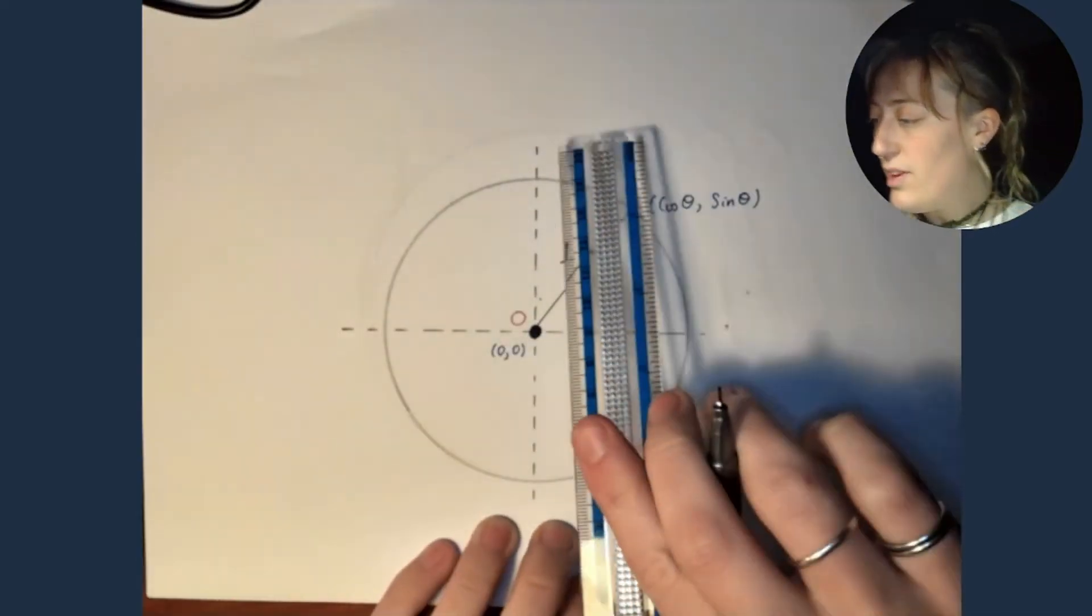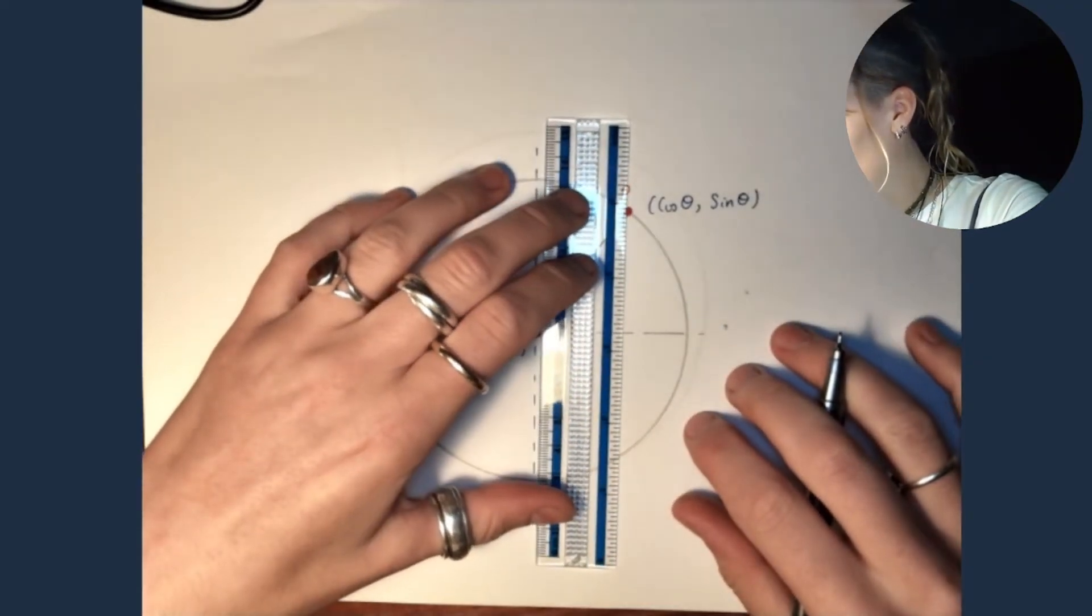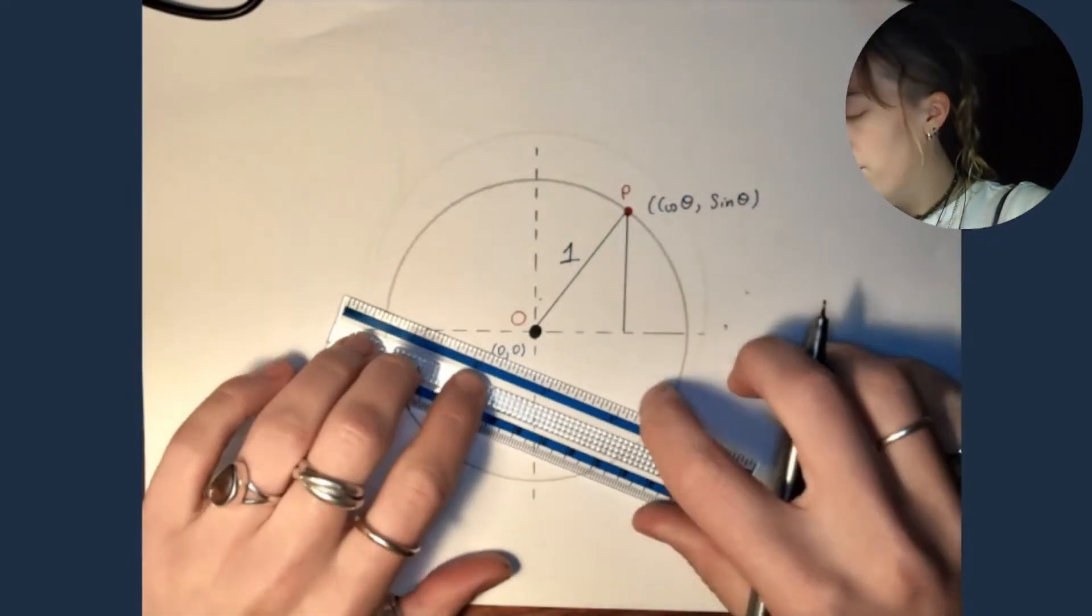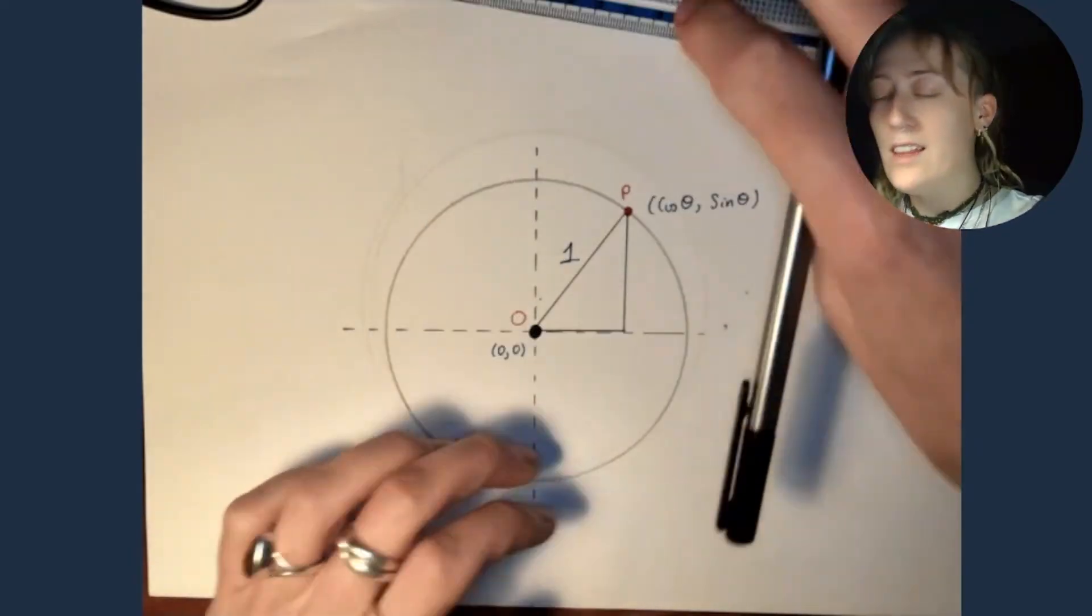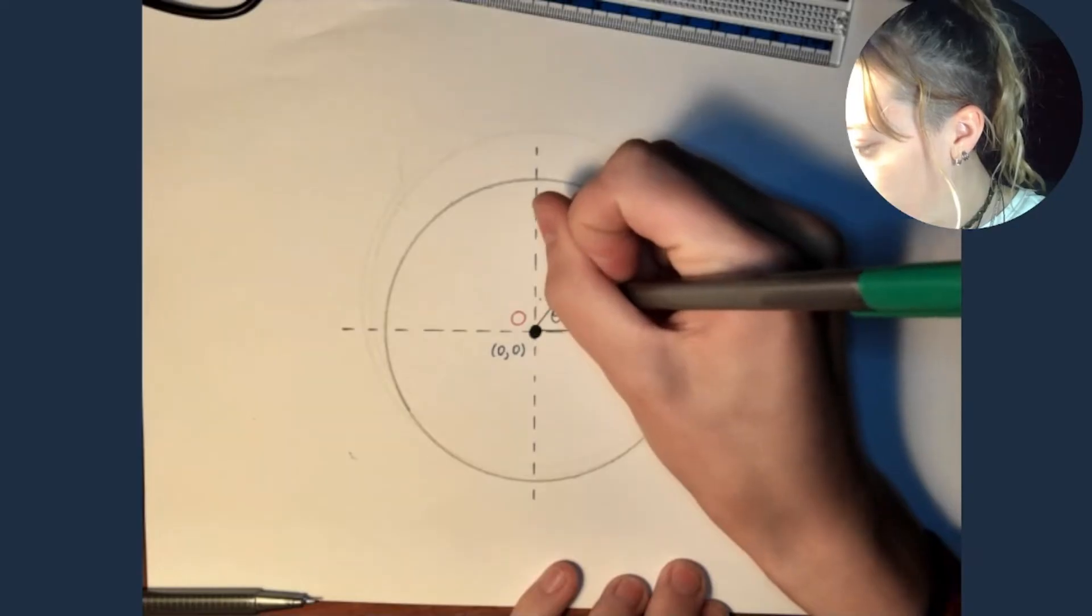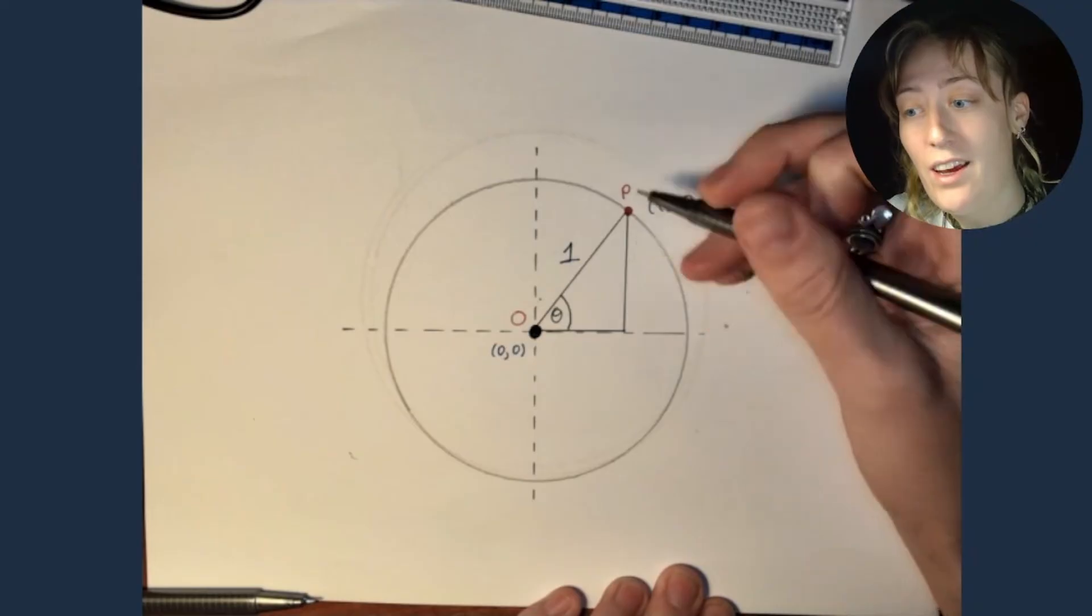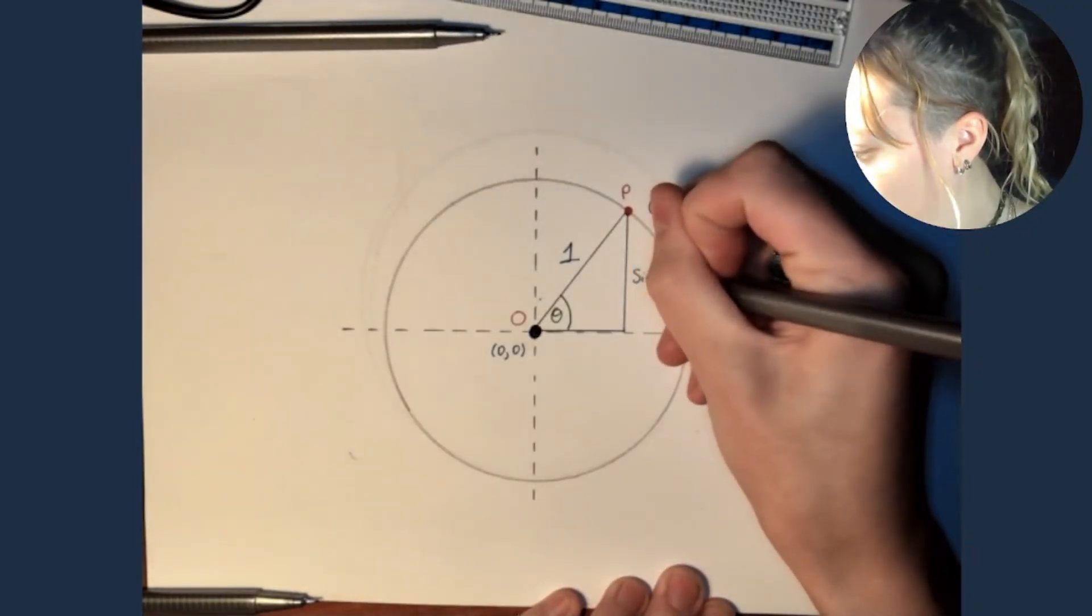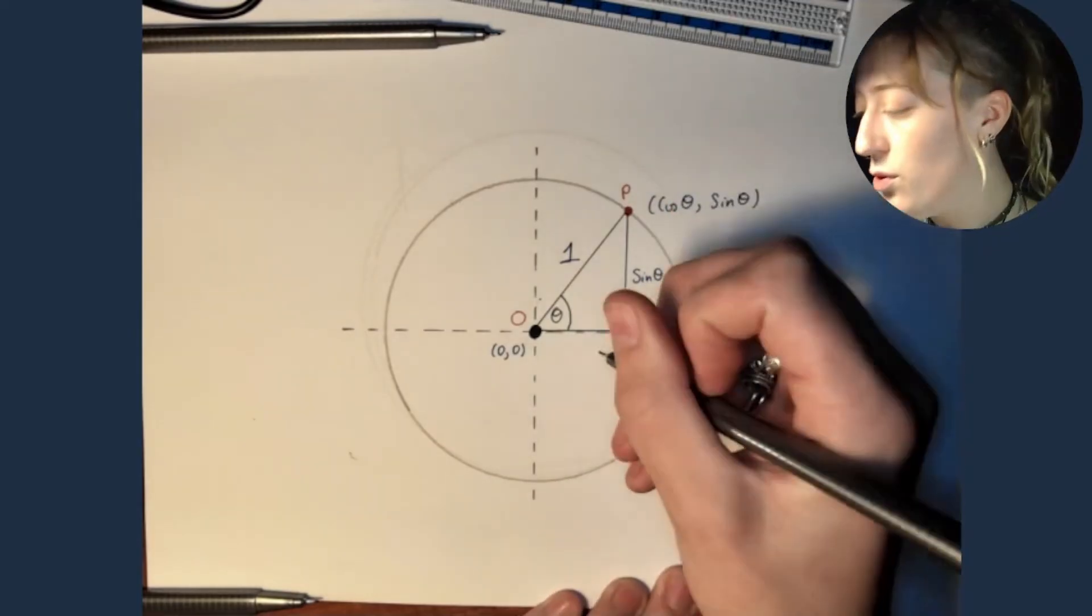So this line here, we can form a right angle triangle in our circle. So we just draw a line straight down here, straight across here. And let's say that this is the angle theta. Then what is the length of the side of this triangle going to be on this side? As we said before, it's going to be sine theta.